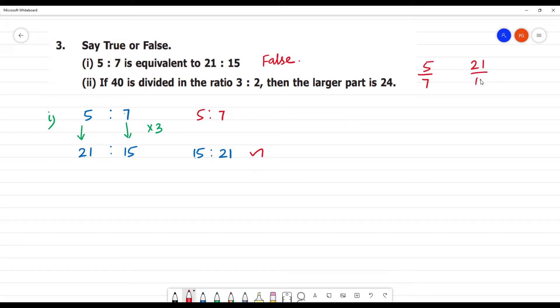21 by 15. Clear? So this is the number cancel. 7, 3 is 21. This is 5, 3 is 15. So 5 by 7 is not equal to 7 by 5. Numerator denominator. So this is not equivalent. Answer is false.